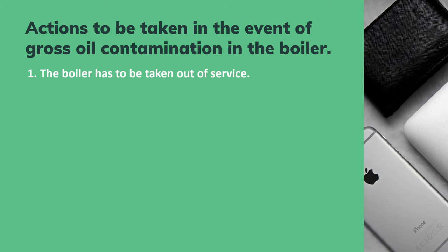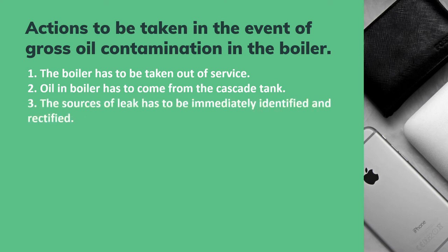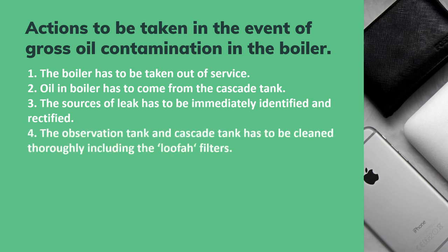Number one: the boiler has to be taken out of service. If there is gross oil contamination, we must stop the boiler and take it out of service. The oil in the boiler must have come from the cascade tank. The source of the leak has to be immediately identified and rectified. The observation tank and cascade tank have to be cleaned thoroughly, including the loofah filters.